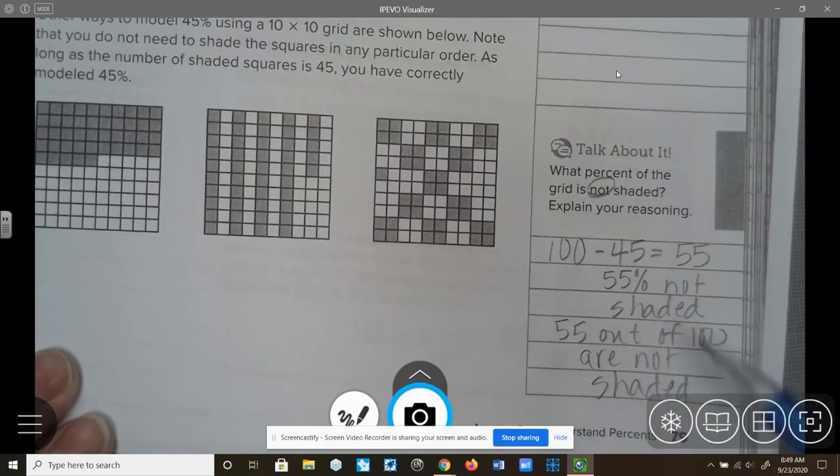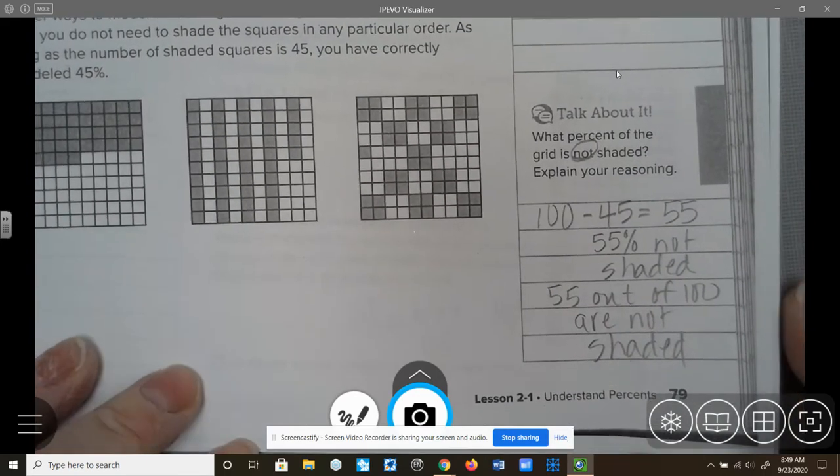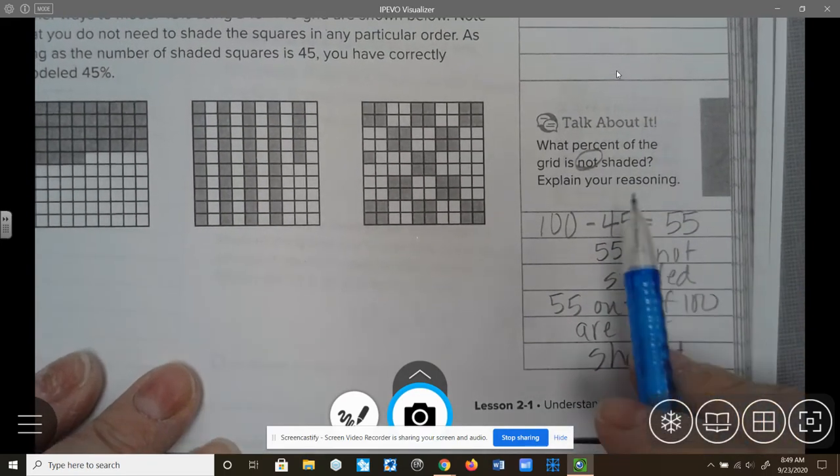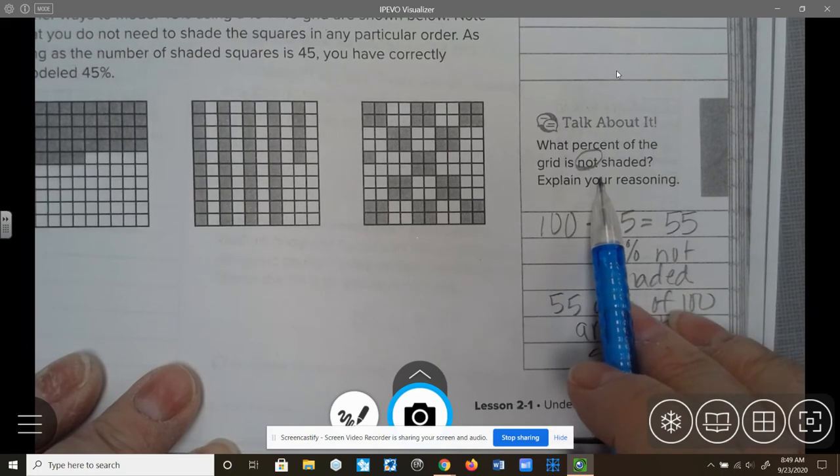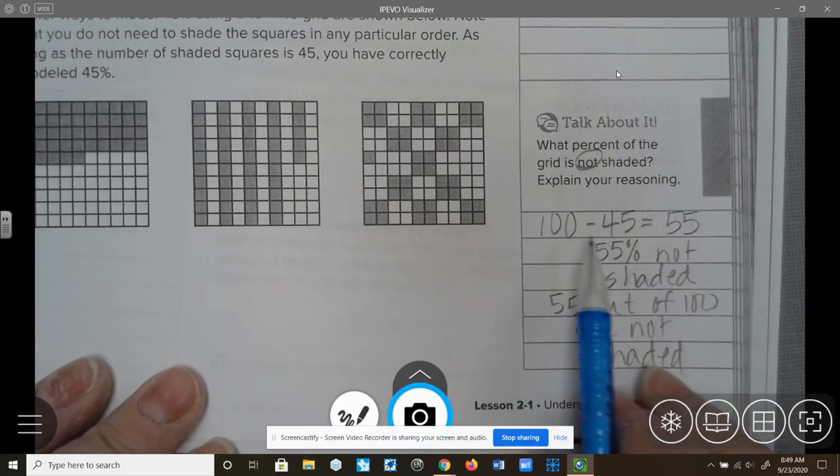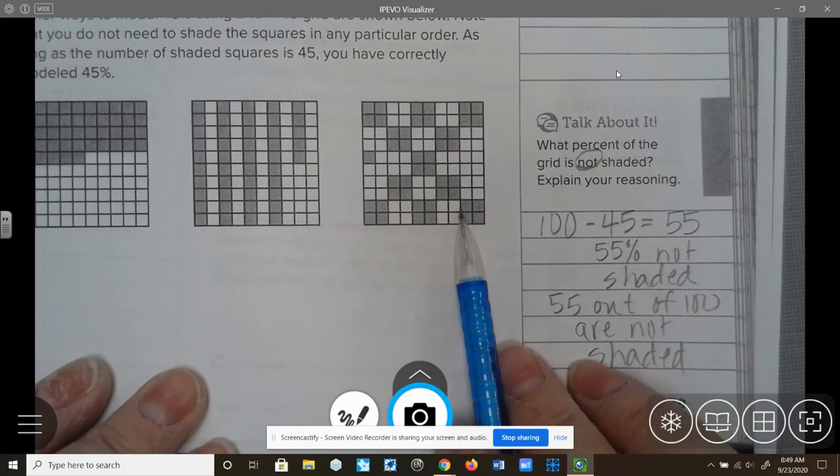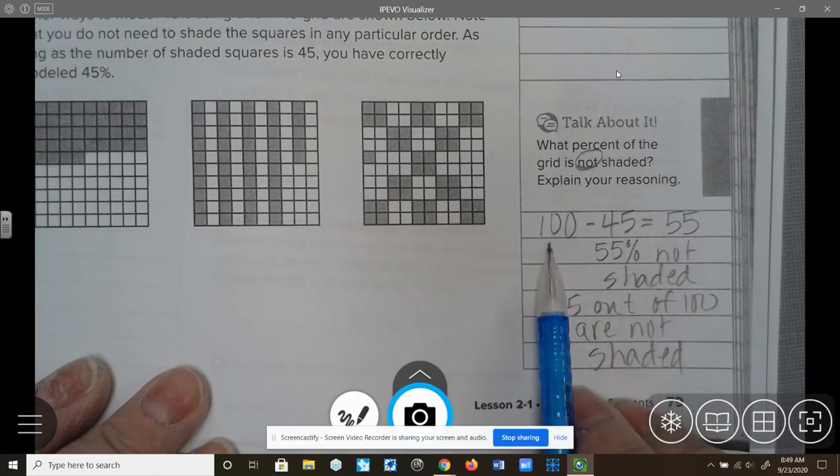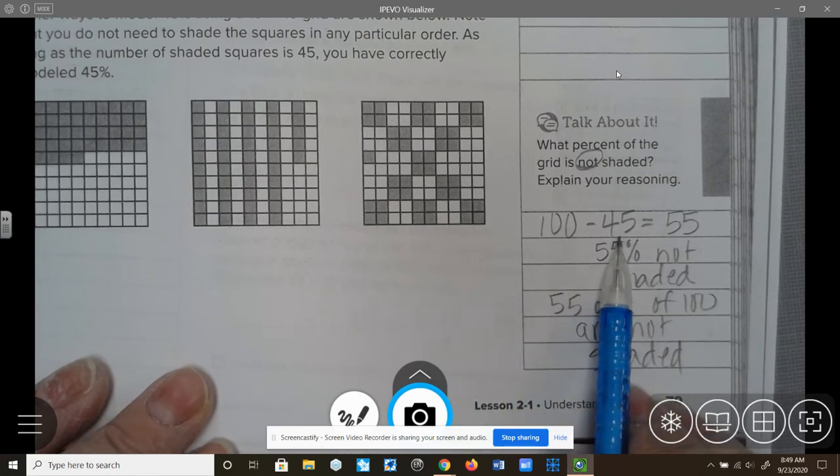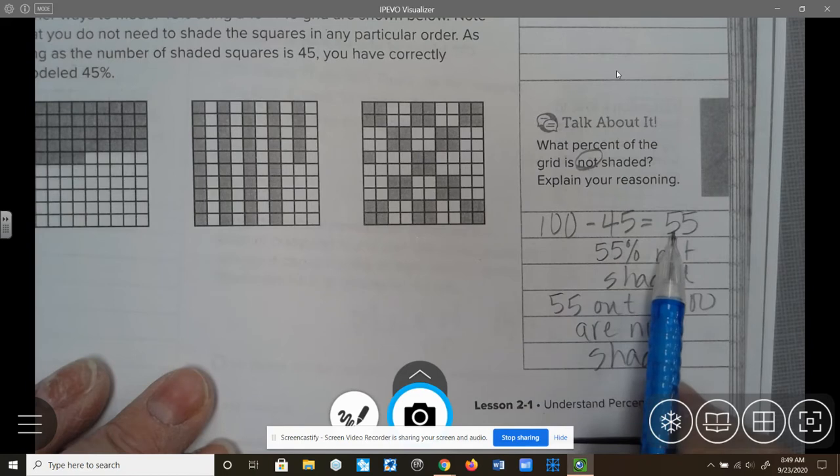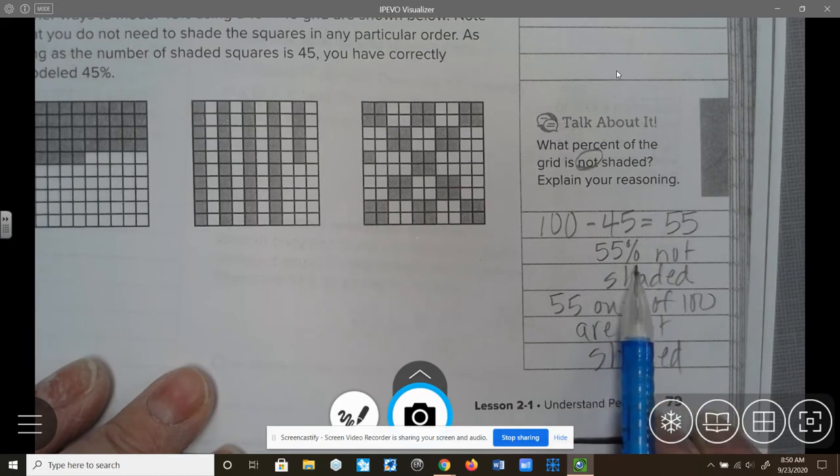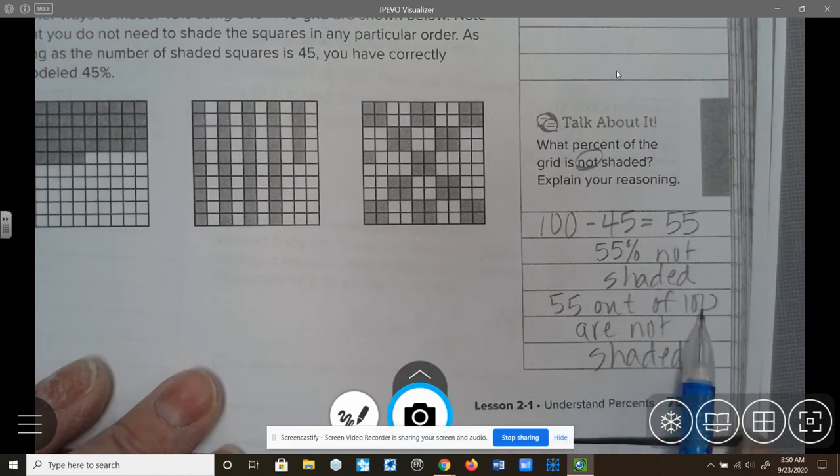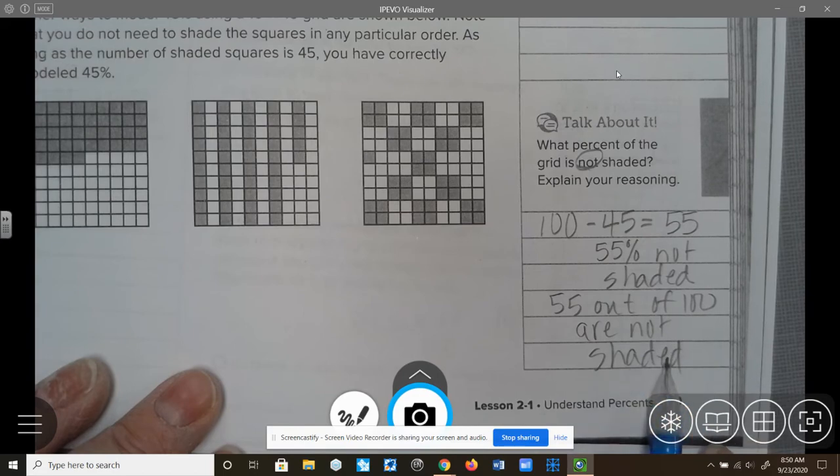Talk about it over here on the side, right above page number 79. What percent of the grid is not shaded? Explain your reasoning. So what I did was, I know the grid is a 10 by 10, so there's 100. I know that 45 are shaded, so I just did a simple subtraction problem, and 100 minus 45 is 55. So I know that 55% is not shaded, and 55 out of the 100 squares are not shaded.